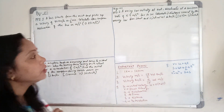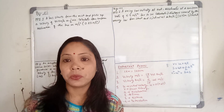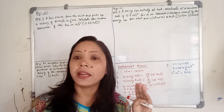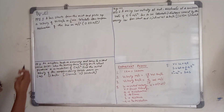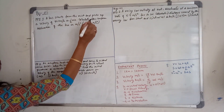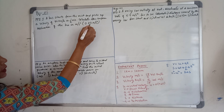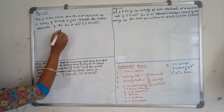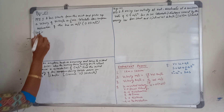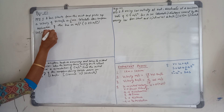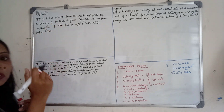Now let's start the numericals. Page number 26, practice problem number 1, part 1. I am solving part 1 and you try to solve part 2 yourself. A bus starts from rest and picks up a velocity of 90 kilometers per hour in half a minute. Calculate the uniform acceleration of the bus in meters per second squared.